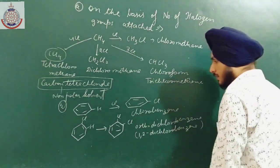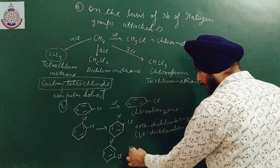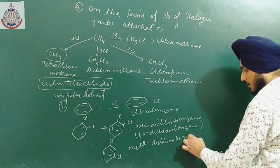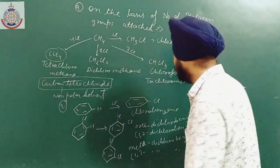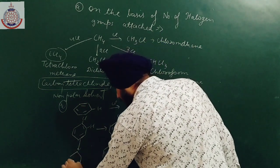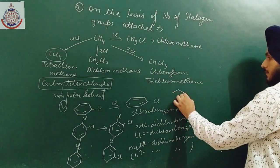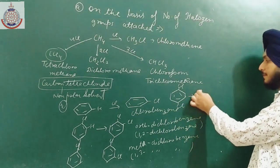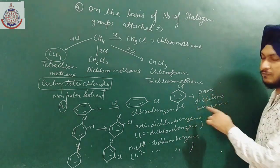If I replace the hydrogen from the third carbon atom, it is known as meta-dichlorobenzene or 1,3-dichlorobenzene. And if I replace the second hydrogen from the fourth position, we get para-dichlorobenzene or 1,4-dichlorobenzene.